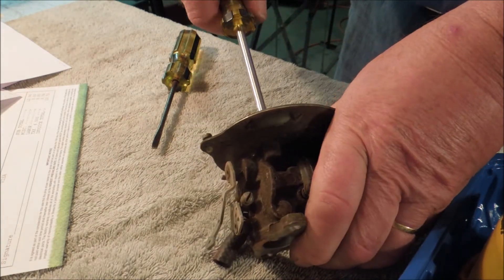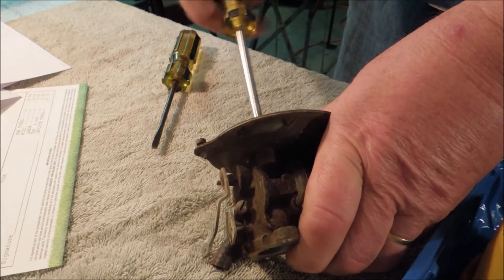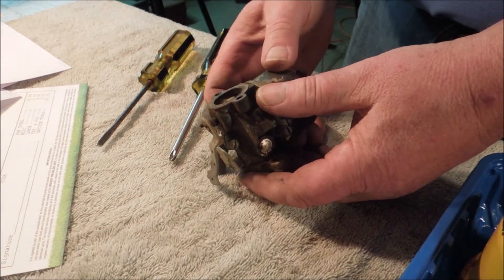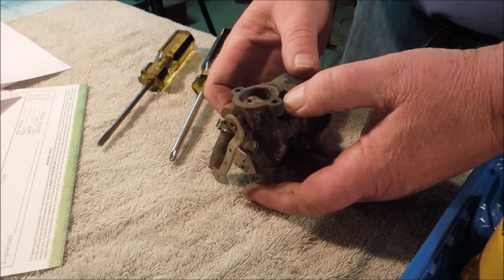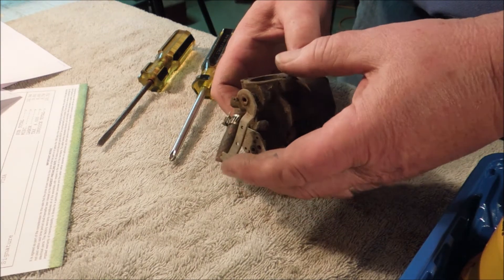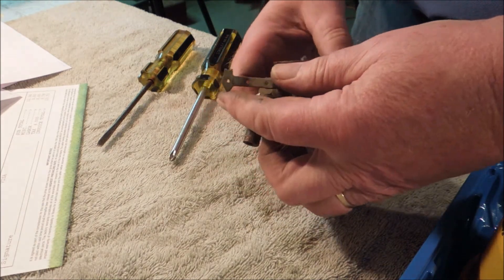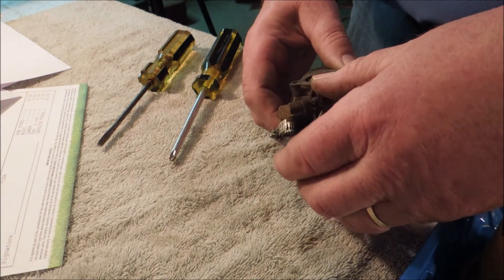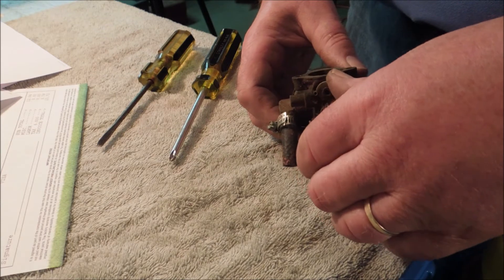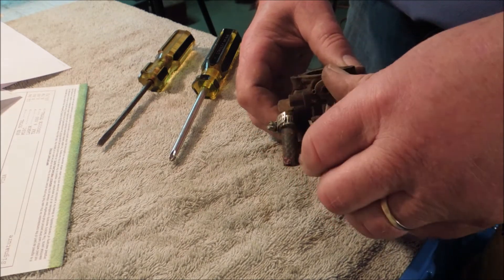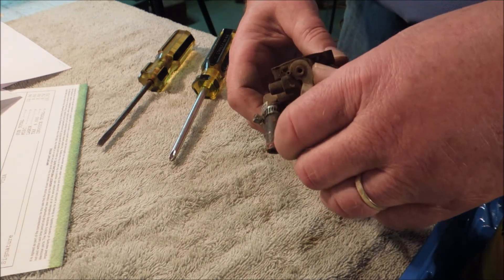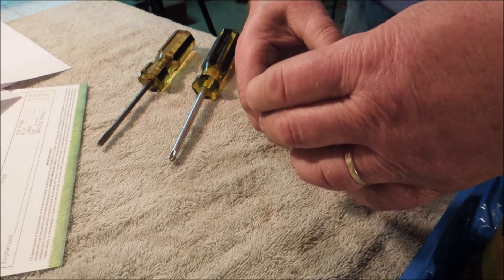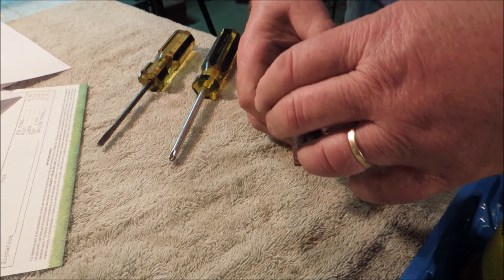I'll take these two screws out here if I can get them to come out. There they went. Somebody's worked on this carb. That choke plate is bent. They usually only bend if somebody's taken it out or reefed on it way too hard. And this one is bent the wrong direction for that to have happened.